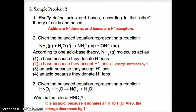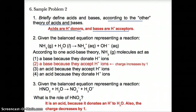Sample problem two: according to the Bronsted theory of acids and bases, acids are H+ donors, meaning they donate hydrogen ions, and bases are H+ acceptors, meaning they accept or gain hydrogen ions.